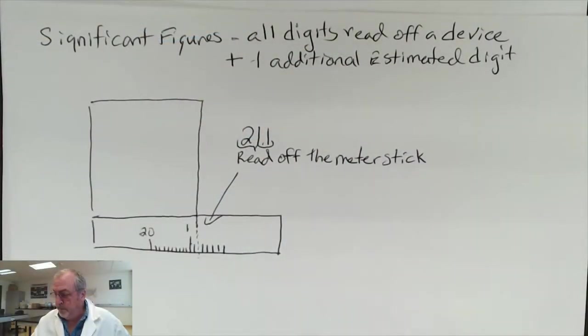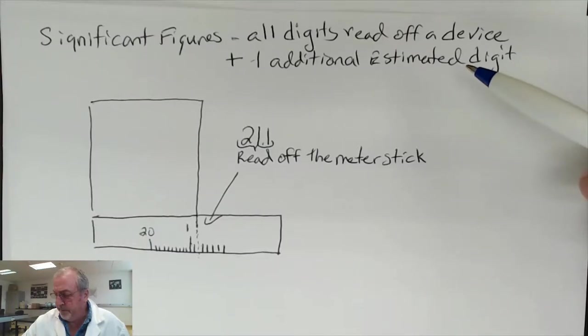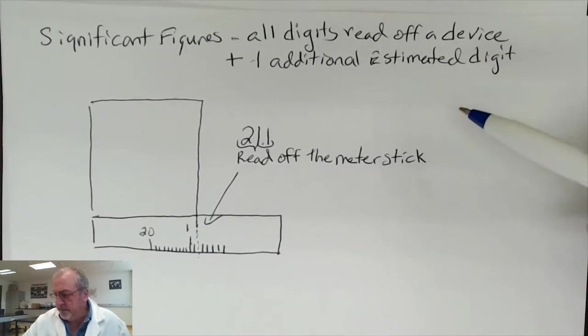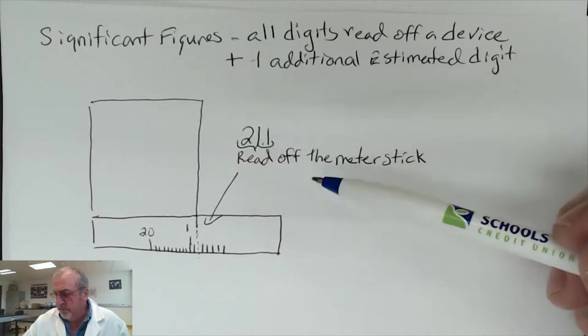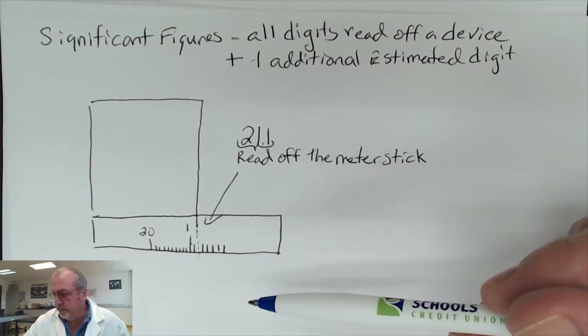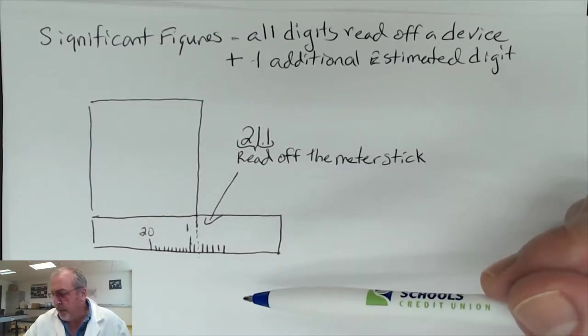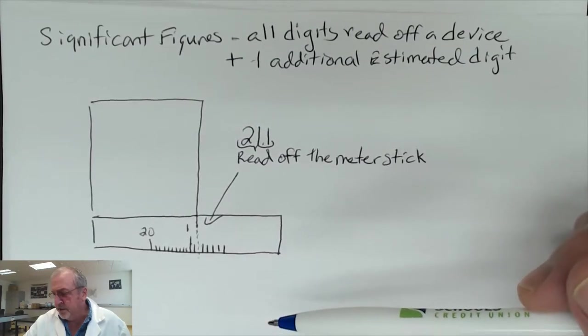The first thing we want to look at is when we take a measurement, what number of digits do we need to include — that brings up the topic of significant figures. Significant figures are all the digits we can read off an analog device, but because the object we're measuring doesn't always fall exactly on a division marker, we have to estimate one last additional digit.